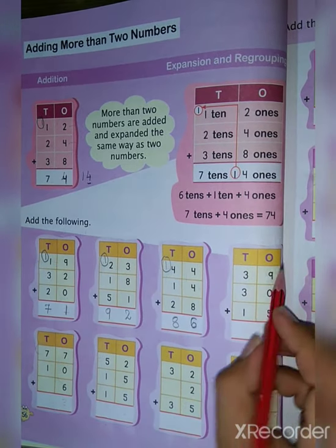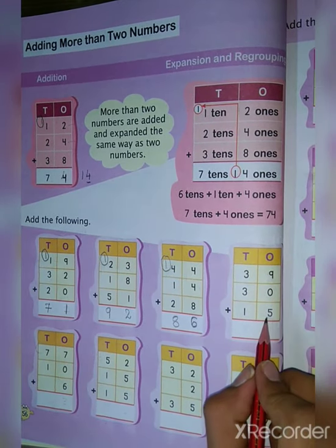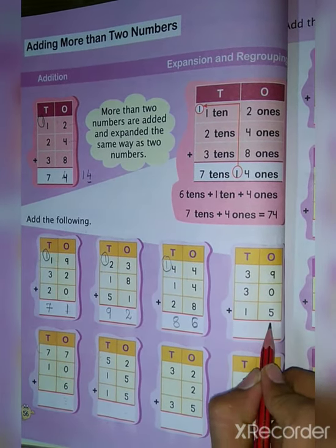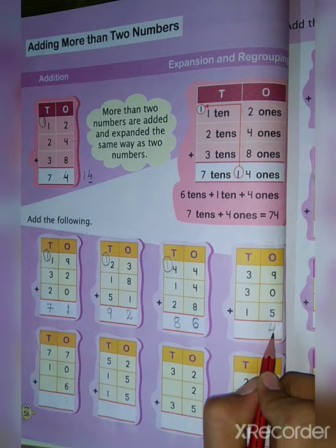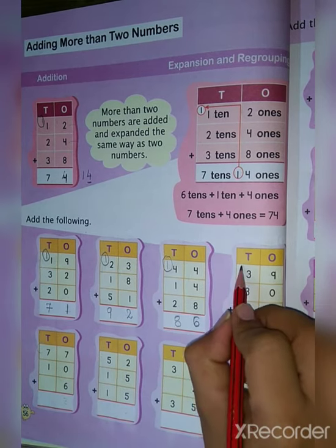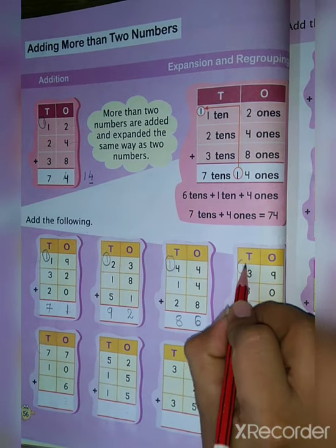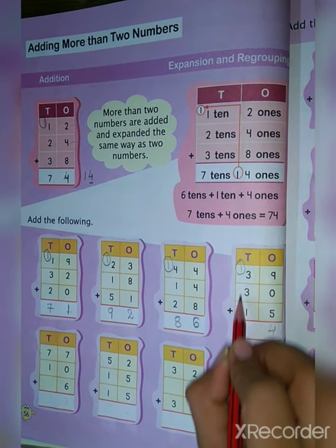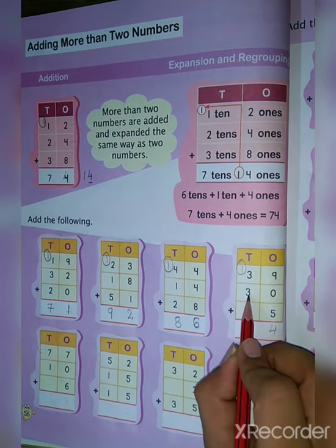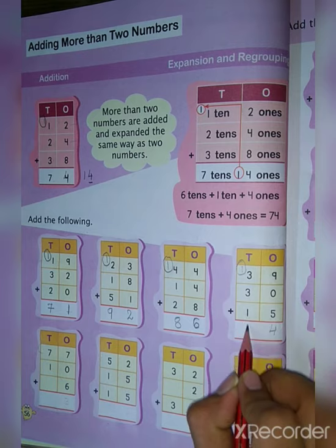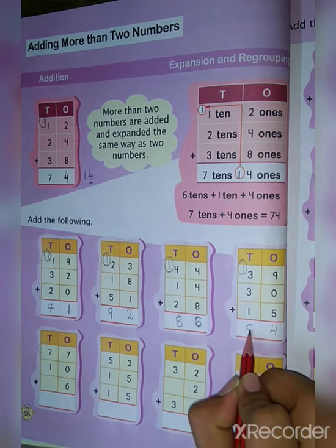Next sum: 9 plus 5 is 14. So put here 4, and 1 is the carry. Then 3 plus 1 is 4, 4 plus 3 is 7, 7 plus 1 is 8.